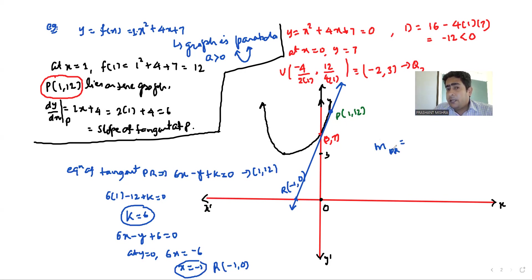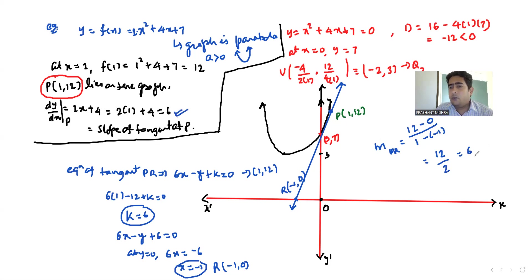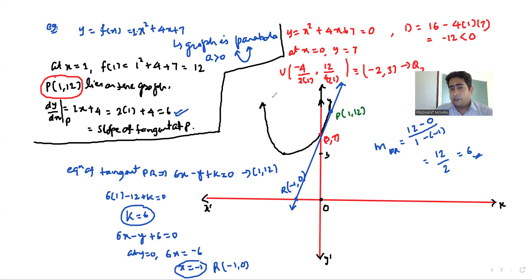Now the slope of line PR: (y₂ − y₁)/(x₂ − x₁) = (12 − 0)/(1 − (−1)) = 12/2 = 6. You can see the slope of this tangent is indeed equal to 6. So the final conclusion of this session is: for any function y = f(x), dy/dx represents the slope of all possible tangents to that curve. Putting the values of x and y into dy/dx gives a numerical value representing the slope of the tangent at that particular point — provided that point lies on the graph. I hope this is clear. We'll see you next time, thank you.